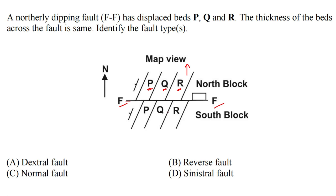Not always, but most of the time a fault displaces the beds. The thickness of the beds across the fault is the same — the thickness has not changed — so we can say that these beds are not part of a fold. In case of a fold, sometimes the thickness of the beds also changes. So we need to identify the fault types.